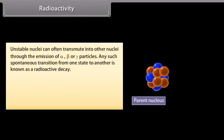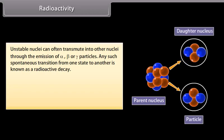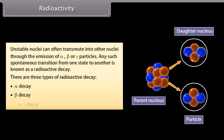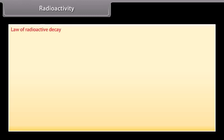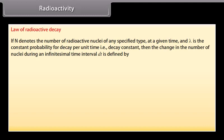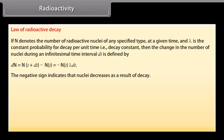Radioactivity: unstable nuclei can often transmute into other nuclei through the emission of alpha, beta, or gamma particles. Any such spontaneous transition from one state to another is known as radioactive decay. There are 3 types: alpha decay, beta decay, and gamma decay. Law of radioactive decay: if N denotes the number of radioactive nuclei at a given time and λ is the decay constant, then dN = −Nλ dt. The negative sign indicates that the number of nuclei decreases as a result of decay.